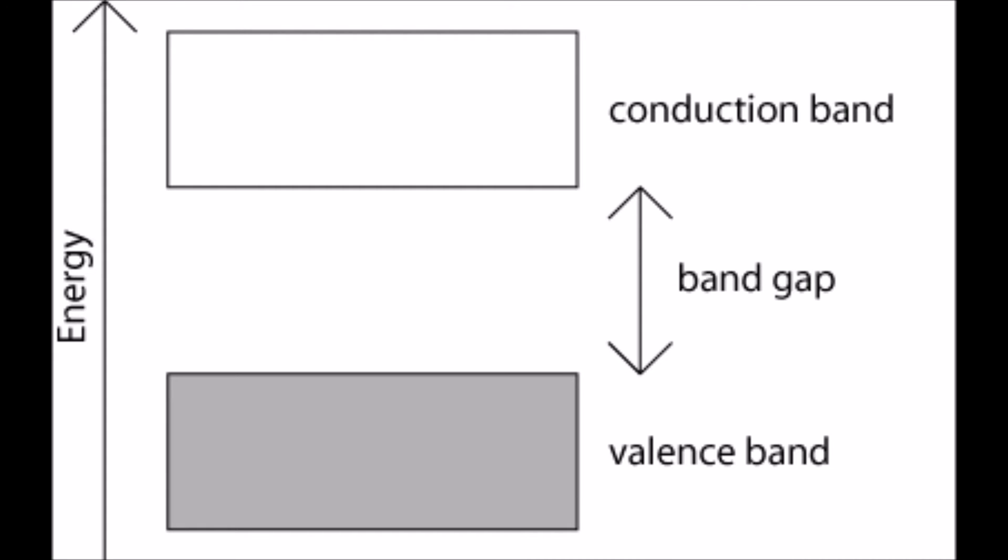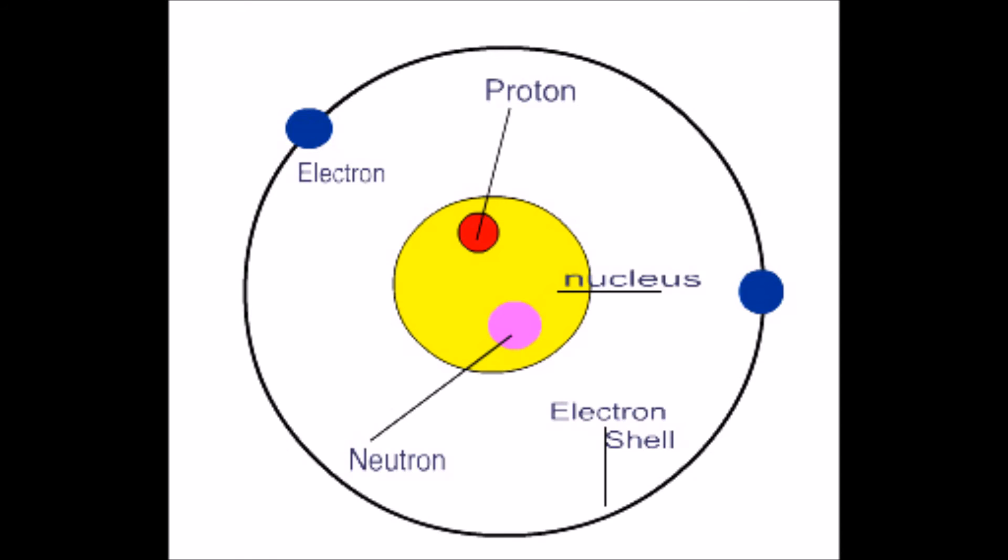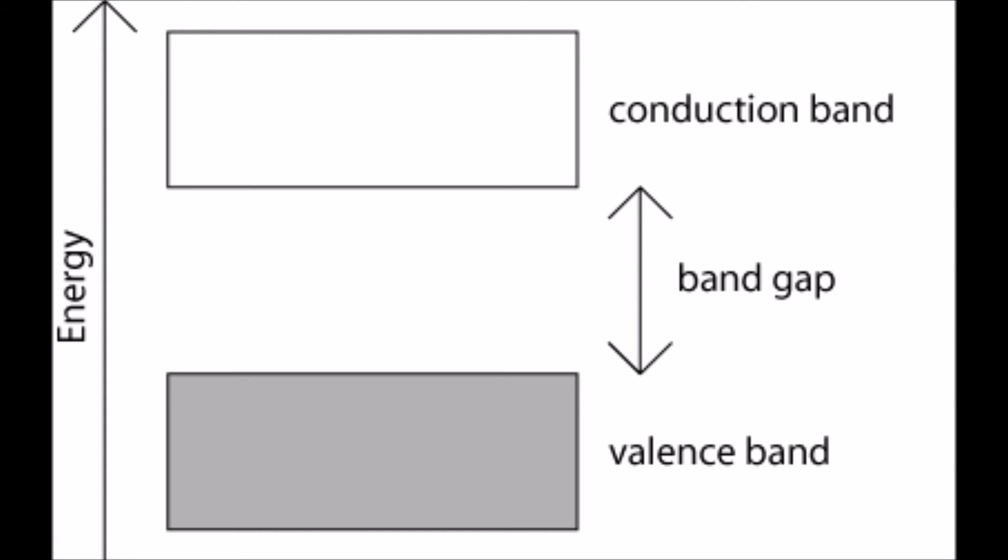First, the valence band. The energy band which is formed by grouping the range of energy levels of the valence electrons — or outermost orbit electrons — is called the valence band. The valence band is present below the conduction band, as shown in the figure.